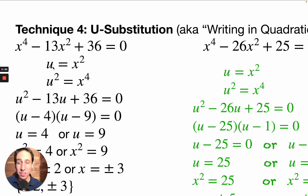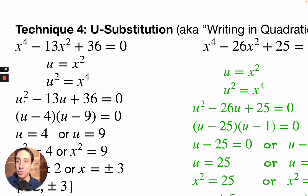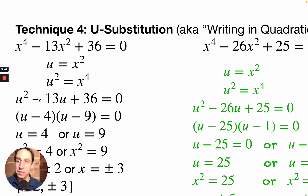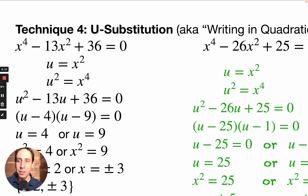Once I make this well-chosen substitution of u equals x squared, u squared equals x to the fourth as well. So I can substitute and rewrite the equation with u's instead of x's. This brings these enormously high exponents back down to a manageable level from chapter 3. I'm rewriting a chapter 5 equation as a chapter 3 equation.